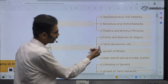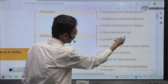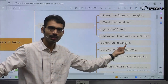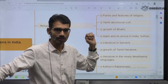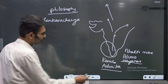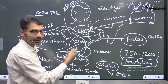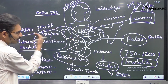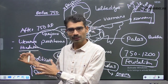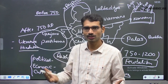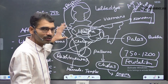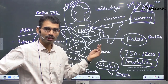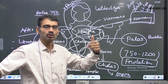When it comes to the religion angle — forms and features of religion, Tamil devotional cult, growth of Bhakti. Islam also emerged in the 600s in Saudi Arabia, and from there it traveled to different parts of the world. During the time of Rashtrakotas, many Islamic settlements were also there on the western coast because we were trading with West Asia since ancient times. Rashtrakotas followed an open, tolerant approach and allowed Muslims to have their own mosques.